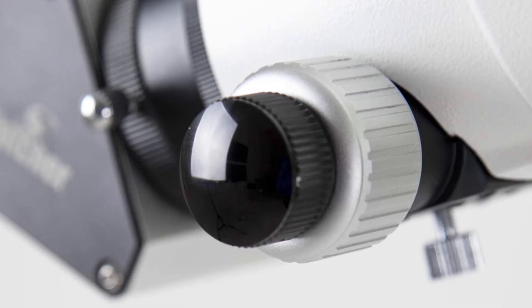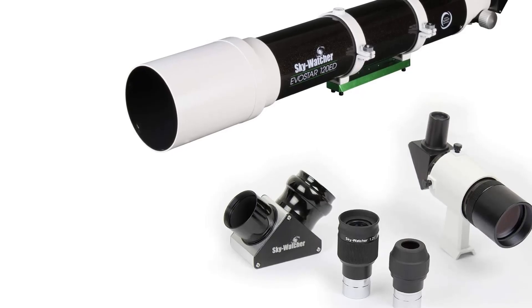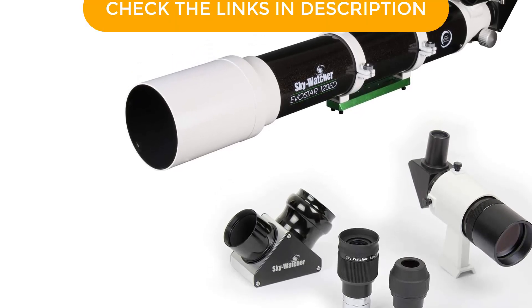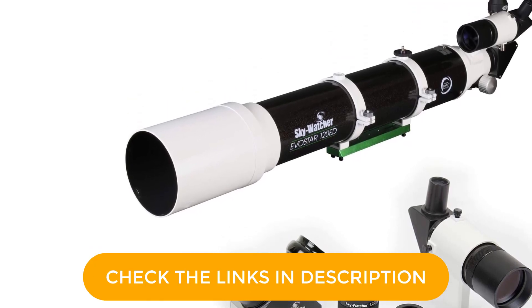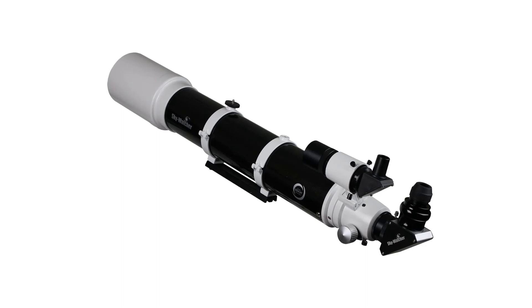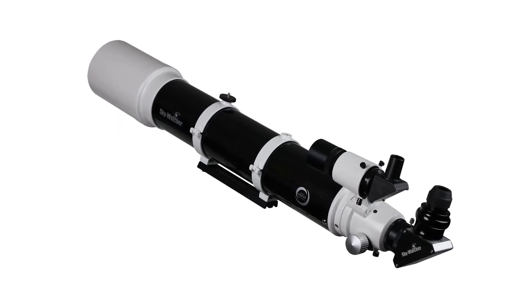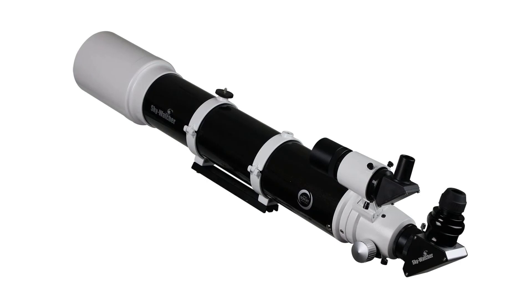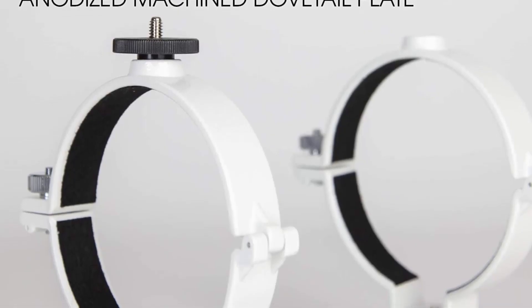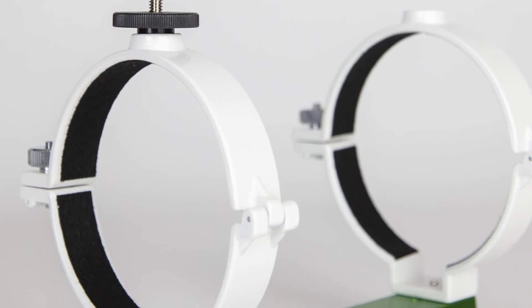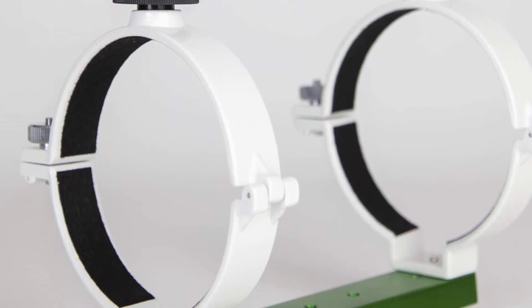The dual-speed 2-Crayford-style focuser with a 1.25 adapter is also another added bonus when talking about the best features out there on the market. The viewfinder is measured with a 8x50RA and a 2-dielectric diagonal, which puts it at top of its class, as well. It has 2-bring attachment hardware and even comes with an aluminum carry case to make transporting to and from your viewing area a breeze.